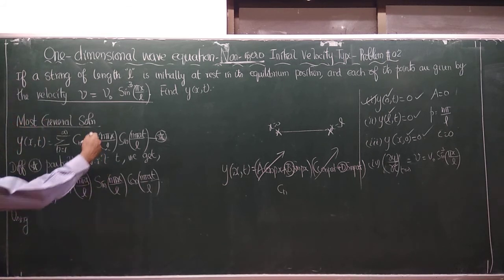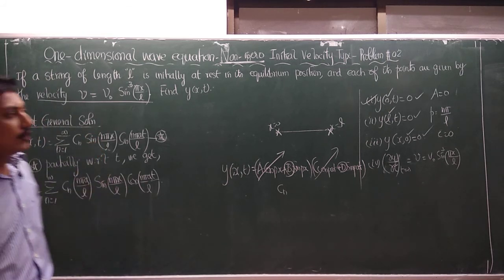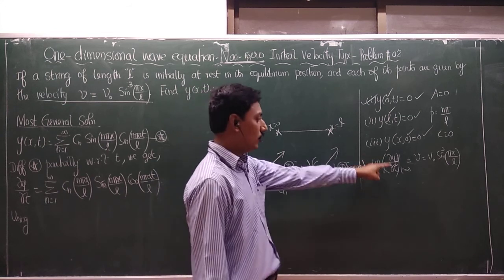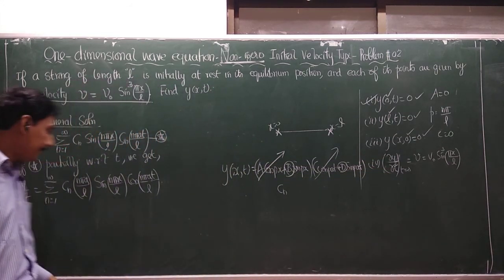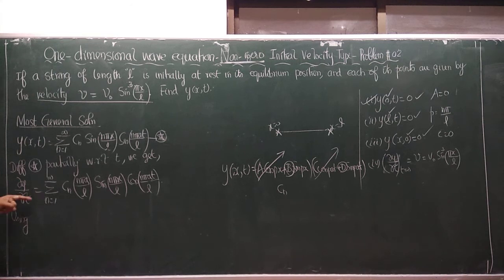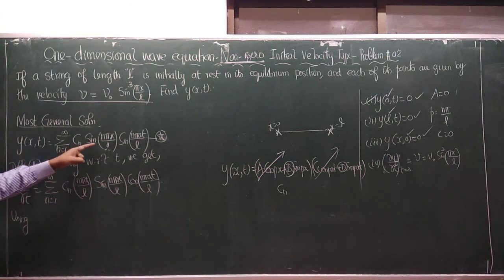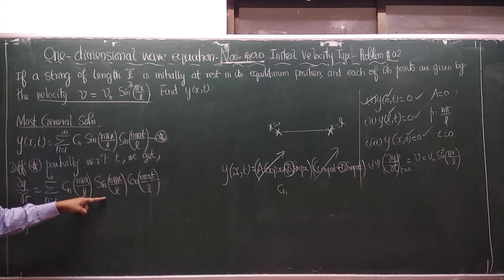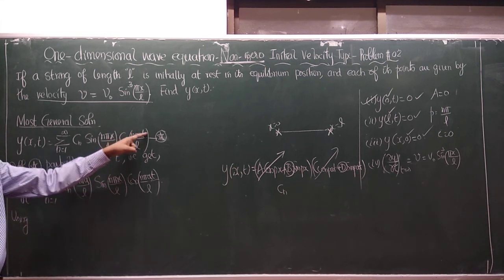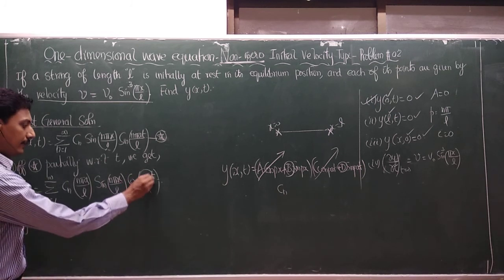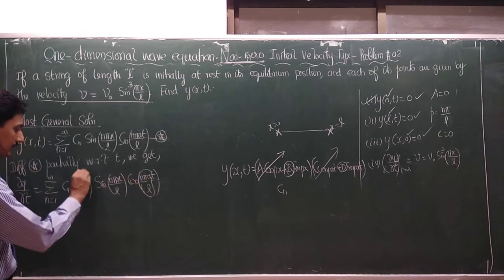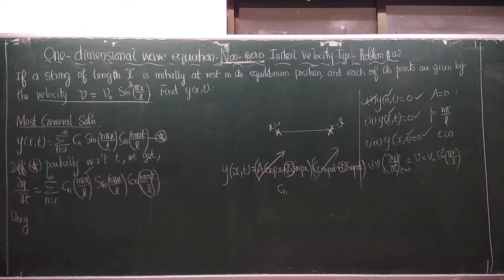We proceed from the star equation to apply the fourth boundary condition. Differentiating with respect to t: ∂y/∂t equals Σ(n=1 to ∞) Cₙ sin(nπx/L) — the x term is untouched — times cos(nπat/L) times the constant nπa/L.